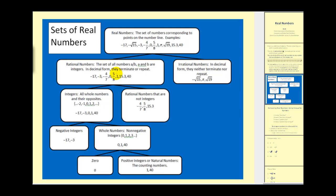The definition of a rational number is the set of all numbers, a divided by b, where a and b are integers. But it's probably easier to think of a rational number as a number that in decimal form, it either terminates or repeats with a pattern.